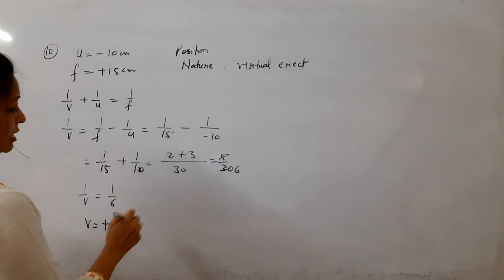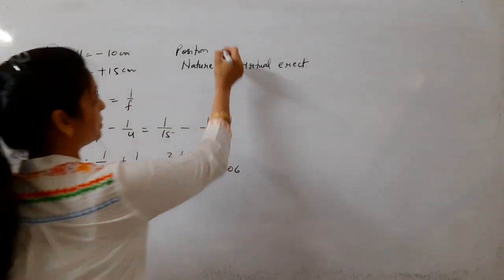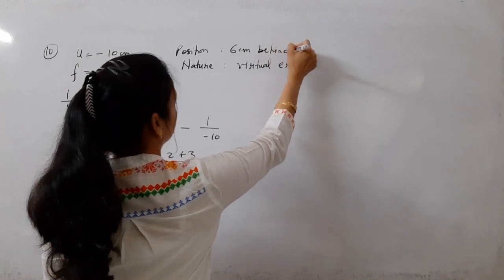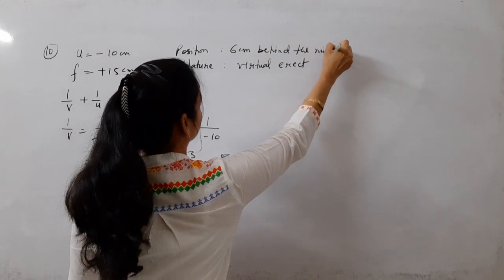And position kya hoga? 6 cm. Kithar? Behind the mirror. 6 cm behind the mirror.